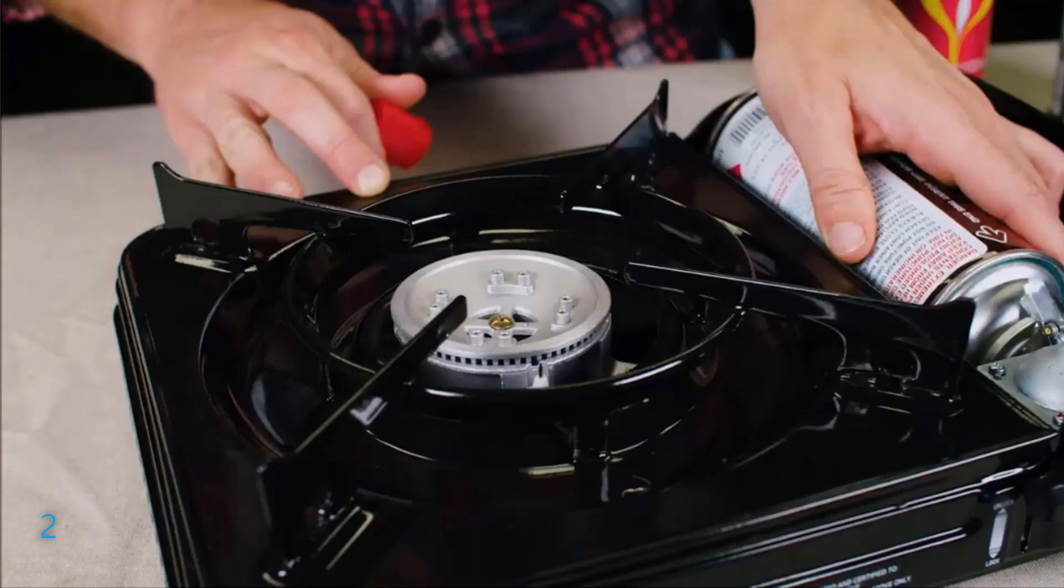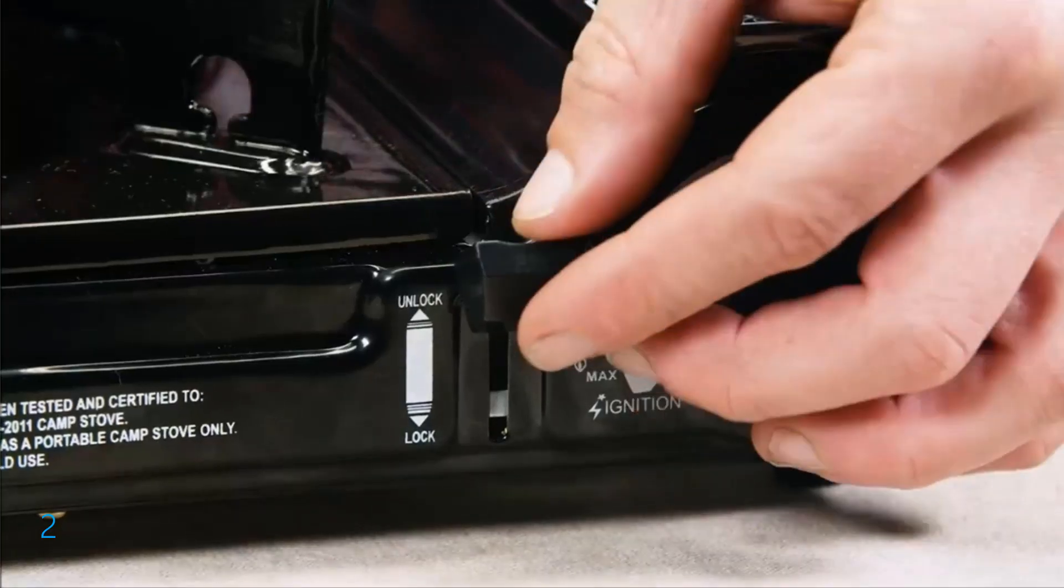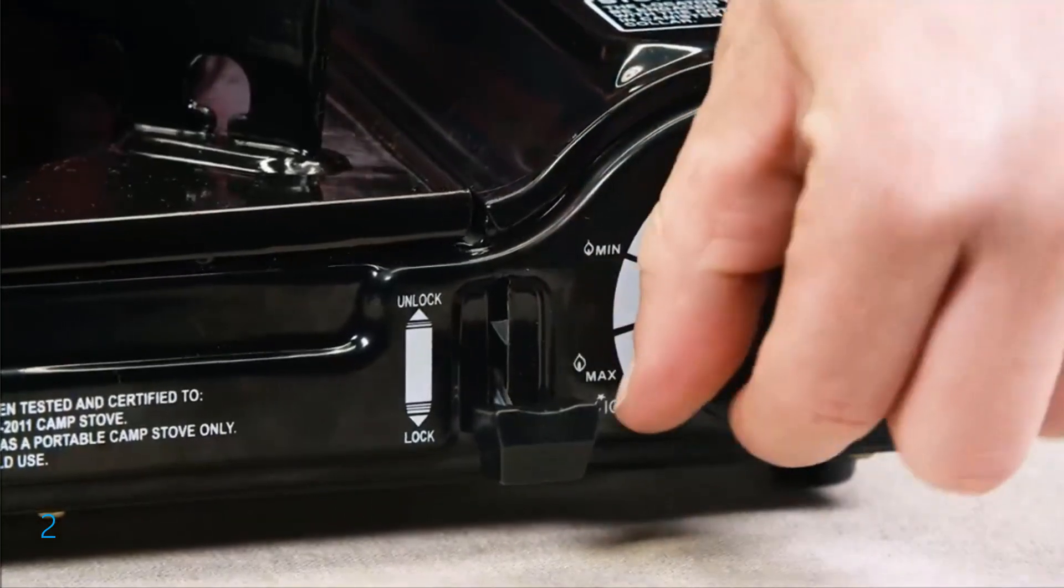Part 2: Operation. Push down on the canister lever to the fuel lock position. If the canister isn't connected properly, you will hear a hissing sound.